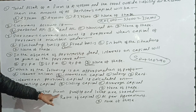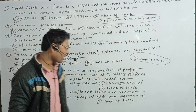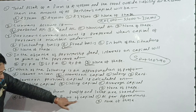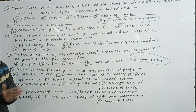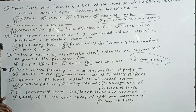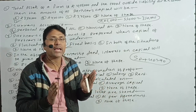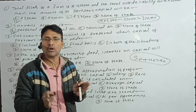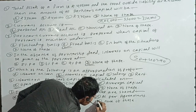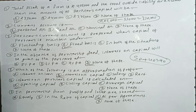The last question: In a partnership firm, profit and loss is shared — equally, in the ratio of capital, as per agreement, or none of these? The right answer is as per agreement. In this video we covered 7 questions. Tomorrow there will be two more videos — copy and note. Thank you, I will see you later.